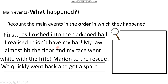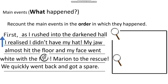I do mention that I didn't have my hat, but rushing into a darkened hall is a bit unclear. We know it's the community hall where the show takes place, but I need to say it more clearly for my audience — so I'll change the order of that sentence. Next, 'Marion to the rescue' — I need to explain that more clearly. Why and how is Marion coming to the rescue? Also, there is a spelling mistake: 'fright' is spelled incorrectly.